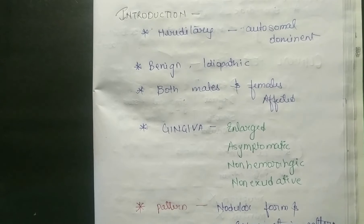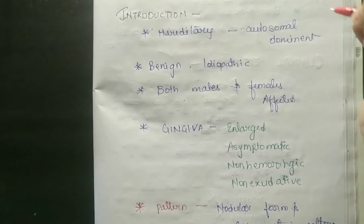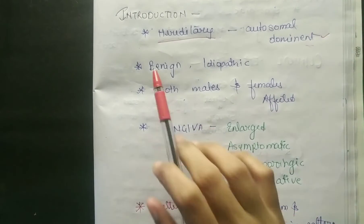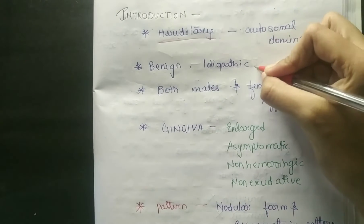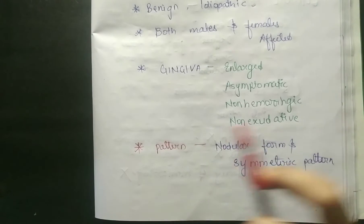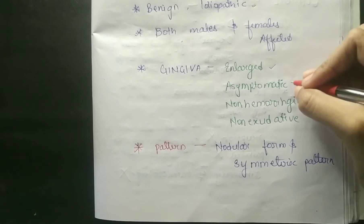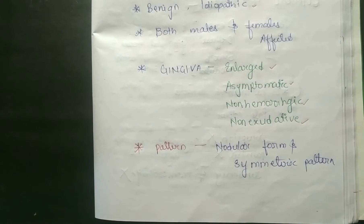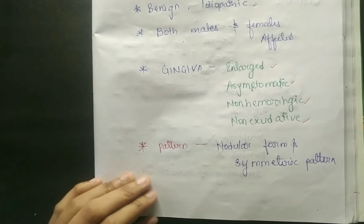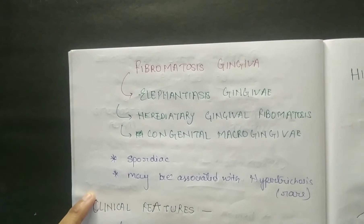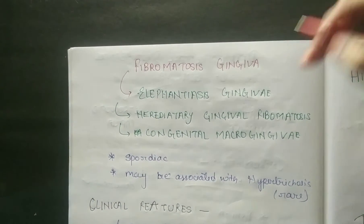First, hereditary disorders are autosomal dominant, benign, and idiopathic — idiopathic means we do not know the etiology. Both males and females are equally affected. The gingiva can enlarge. Symptoms: it is asymptomatic, non-hemorrhagic, and non-exudative. You can see a nodular form and a symmetric pattern with nodules.